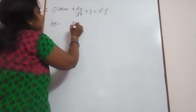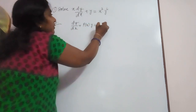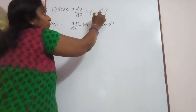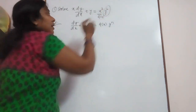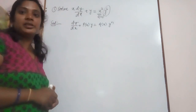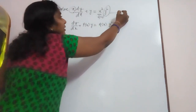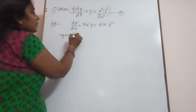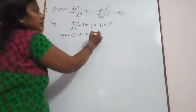The Bernoulli's form is dy/dx plus p(x) into y equal to q(x) into y power n. Here x cube is the q(x) term and the right side has y power 6, which means it is in Bernoulli's form. The coefficient of dy/dx is x, so we divide the given equation by x and y power 6.